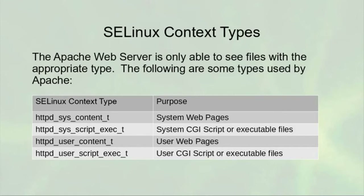If you are in user home directories and you've turned on user directory configurations, you can use httpd_user_content_t or httpd_user_script_exec_t. In addition to those types, you also have types for directories related to whether or not you are allowed to upload files.